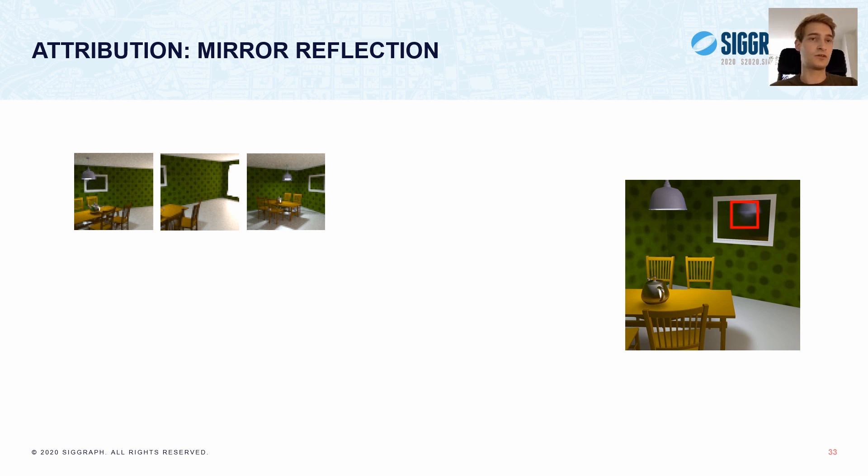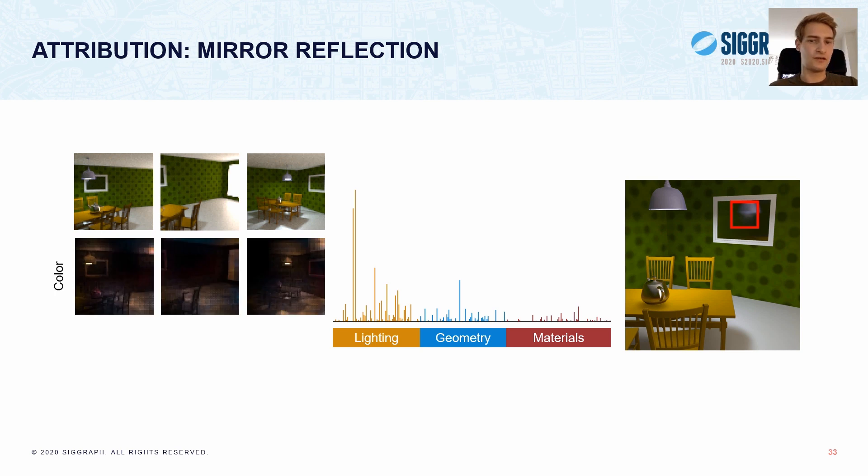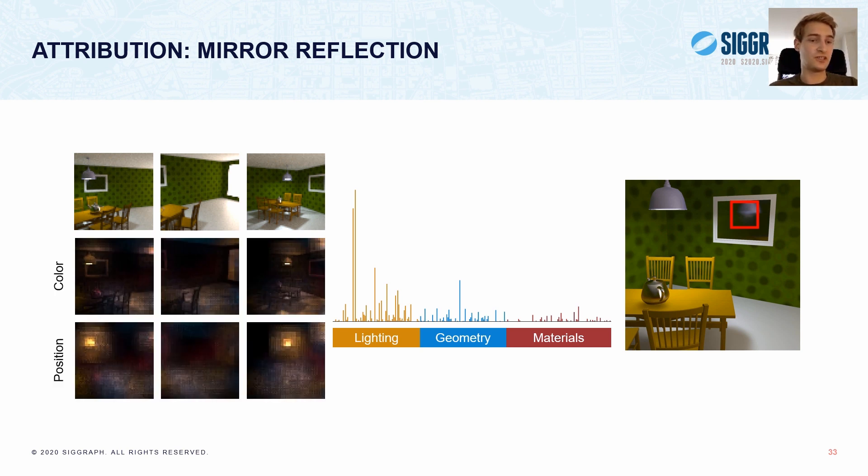First, let's compute the attributions for the patch with respect to the representation. We can see that we have high attribution values for the lighting partition, and only some for geometry and materials. We can extend the attribution all the way to the observations, and this allows us to see, for instance, that lighting information, in yellow, is sourced primarily from pixels that show the fixture.